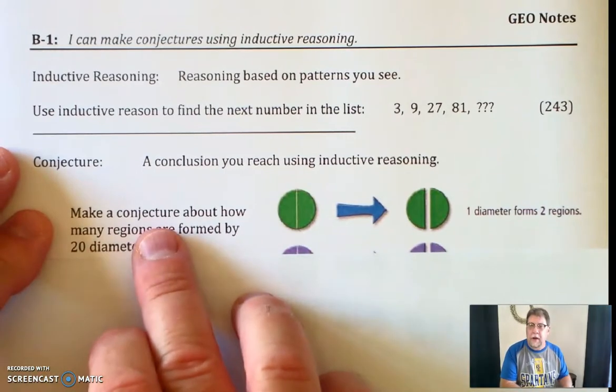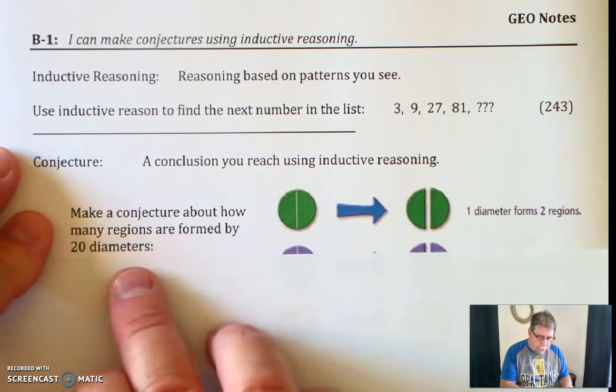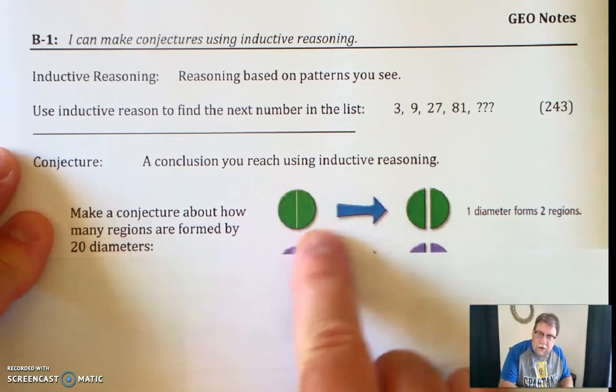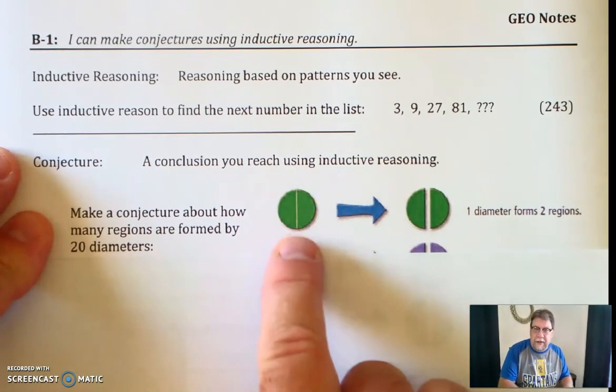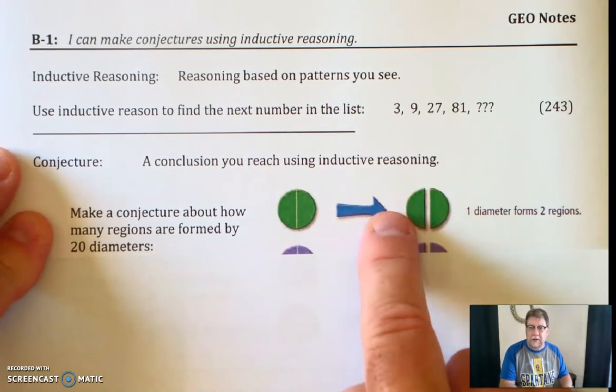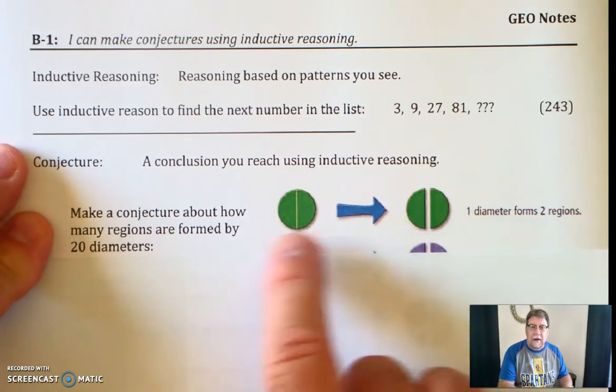Here, make a conjecture about how many regions are formed by 20 diameters. So we're looking at a circle, and we're looking at a diameter. In this case, we have a circle with one diameter, and it creates two regions, a left half and a right half.